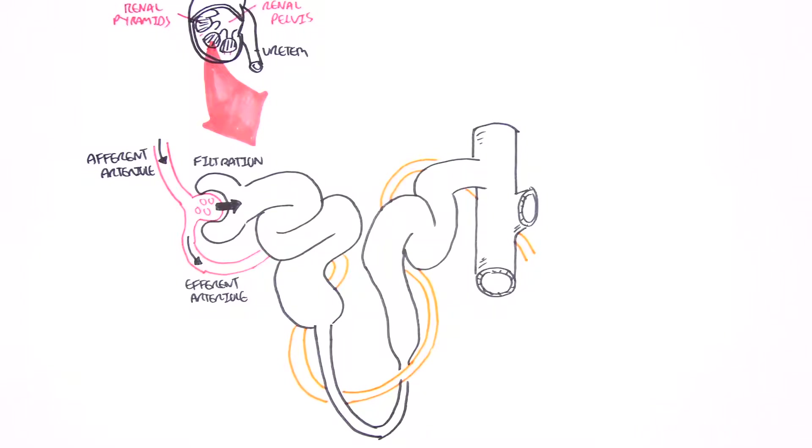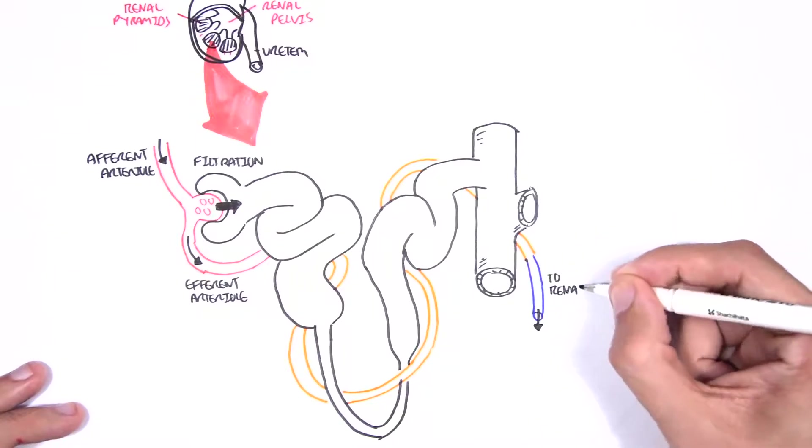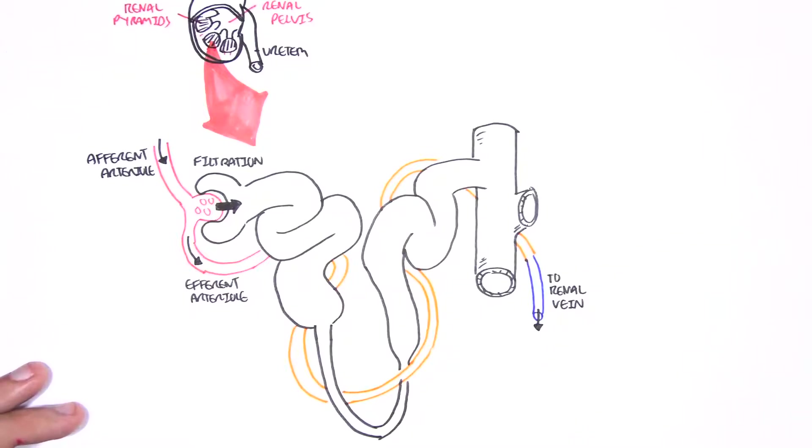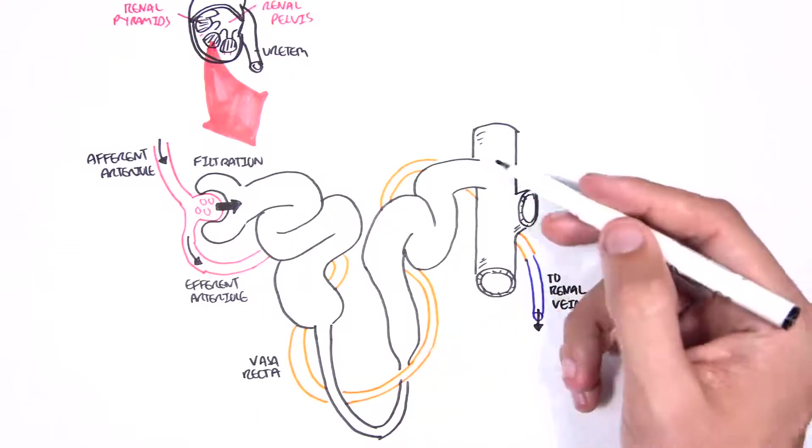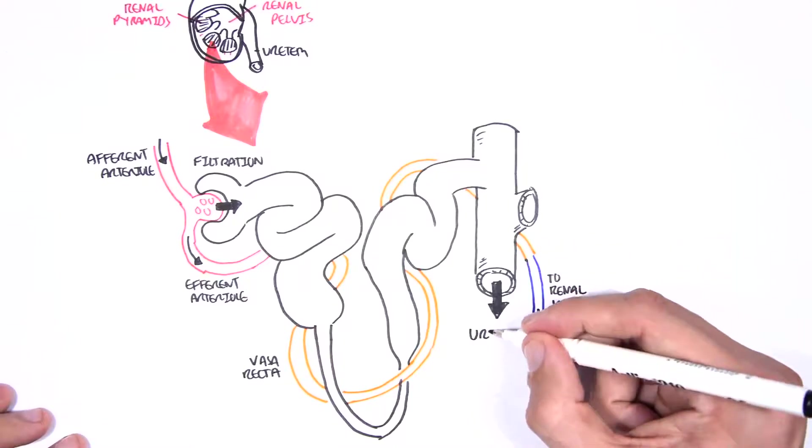The vasa recta will then leave and head towards and join with other veins and form essentially the renal vein. The filtrate which is inside the nephron is what we pee out - it's our urine output.